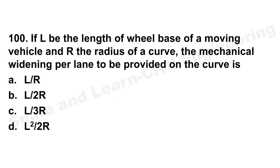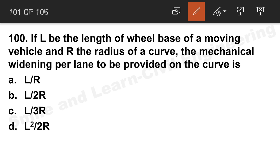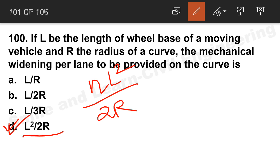Question 100: If A is the wheelbase length of a moving vehicle, mechanical widening per lane is L²/2R; for n lanes it is nL²/2R. You also need to remember the formula for psychological widening. Both mechanical widening and psychological widening formulae are important as numerical type problems may be asked in the exam.